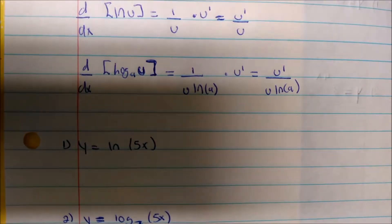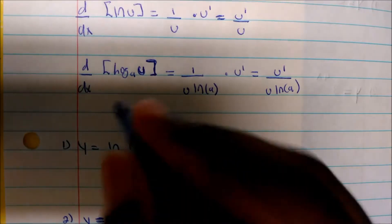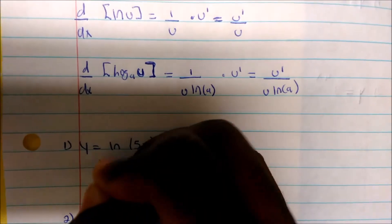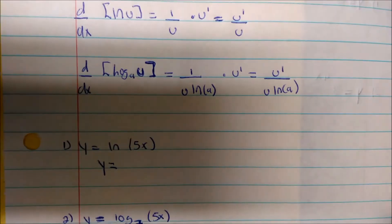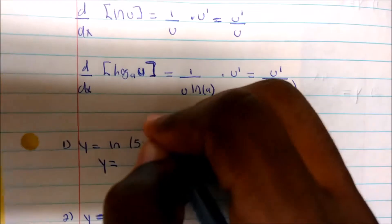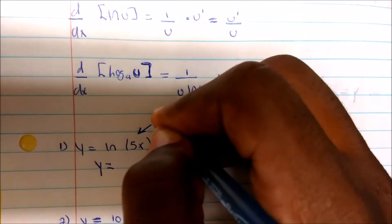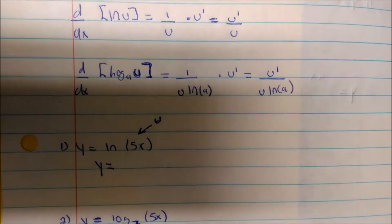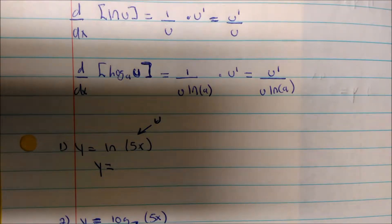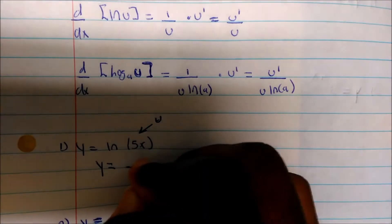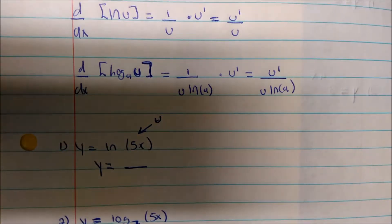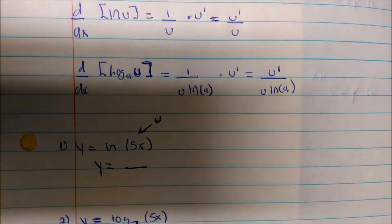Let's look at this first one. The derivative of ln(u) — your u is always going to be your argument. So just remember, u will always be your argument in terms of the logarithmic function. Anytime you see a natural log or log, automatically draw a fraction bar because these will always be fractions.